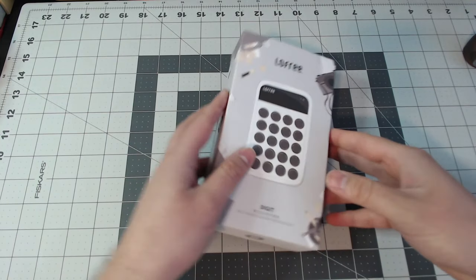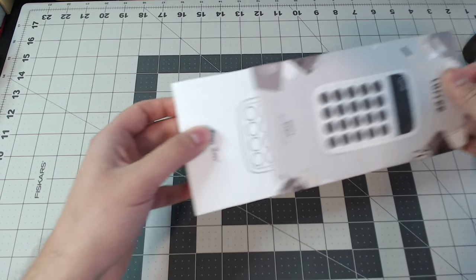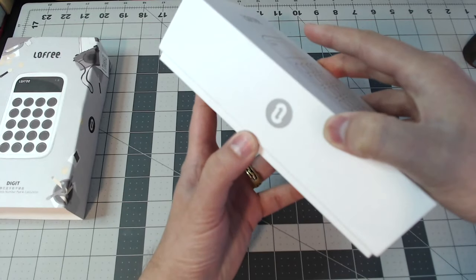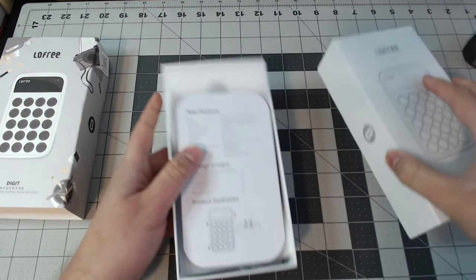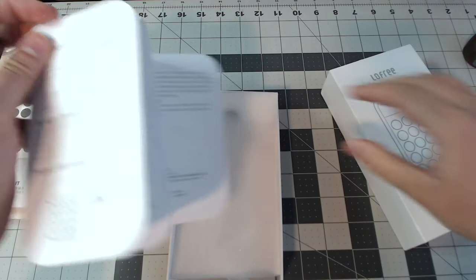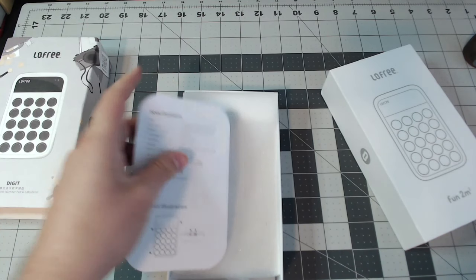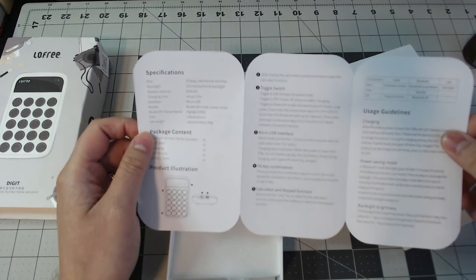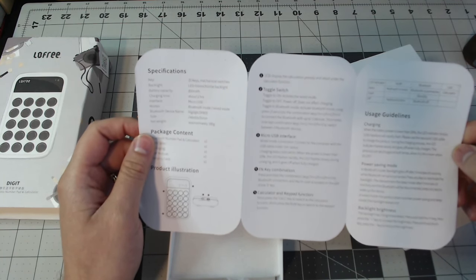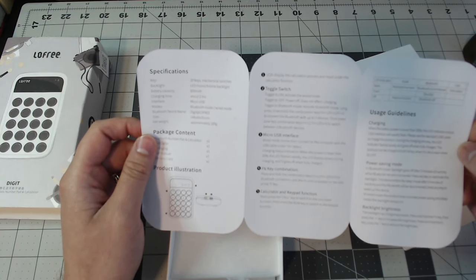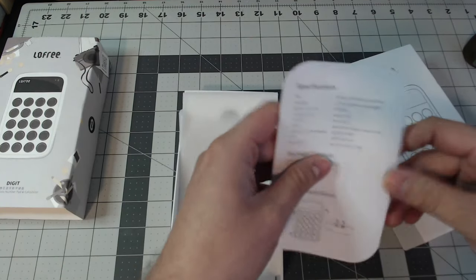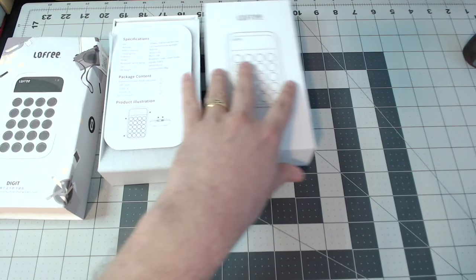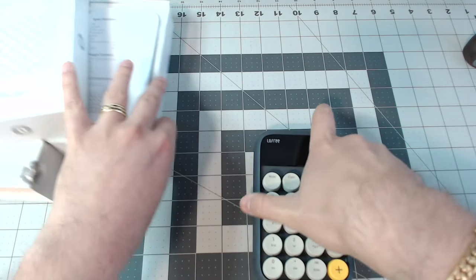This is the box I received when I got the Lofree this past month. There's a little cover on it, and it's not in there because I already took it out. But this is the little instruction guide it comes with. It basically charges with a USB interface and has different things on it. Basically it's a calculator, so let's show what it looks like. Here it is.